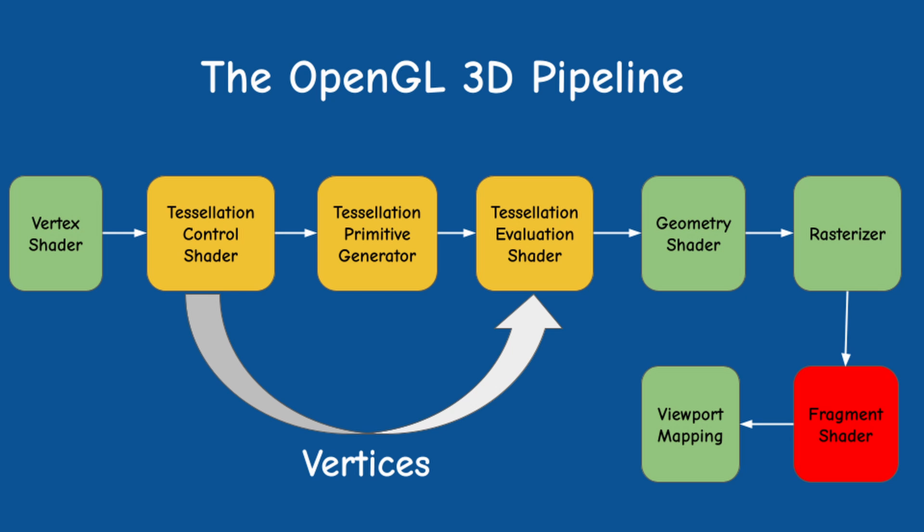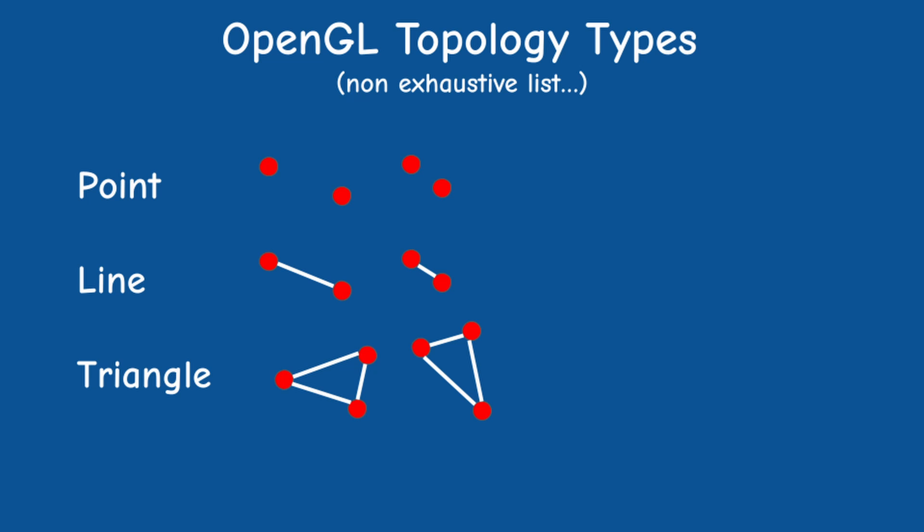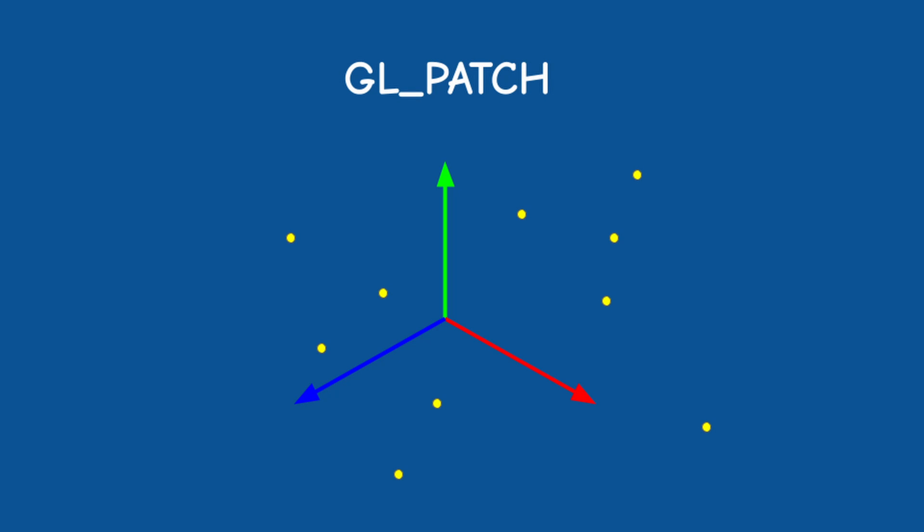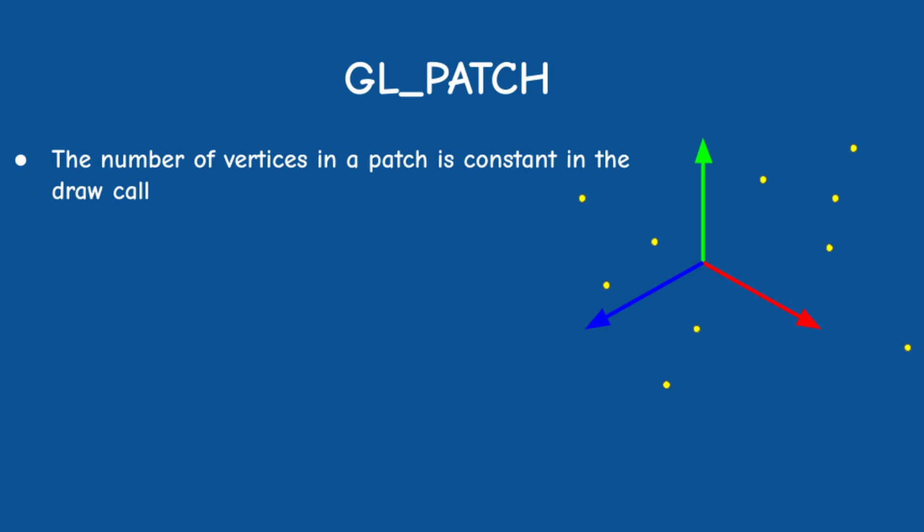This brings us to the next critical concept. The tessellation process works on a new topology type called a patch and this is the only topology type that can be used here. If you try lines or triangles it will simply not work. So what is a patch? A patch is a group of vertices that have no predefined geometric shape. It's better to think about a patch as individual vertices rather than some sort of a complex surface. The number of vertices in the patch is constant across the entire draw call and must be specified using glPatchParameteri and the parameter GL_PATCH_VERTICES.